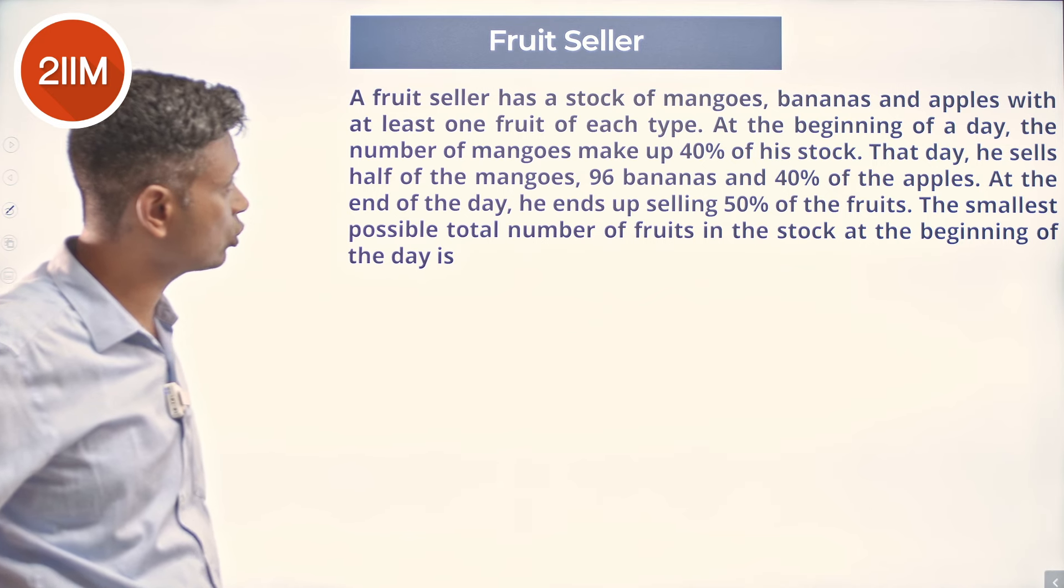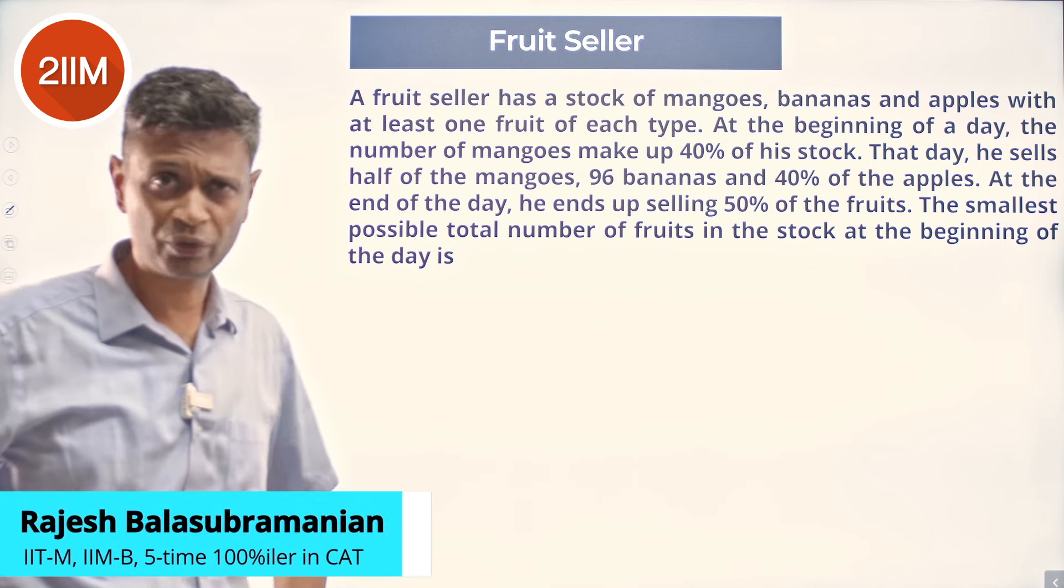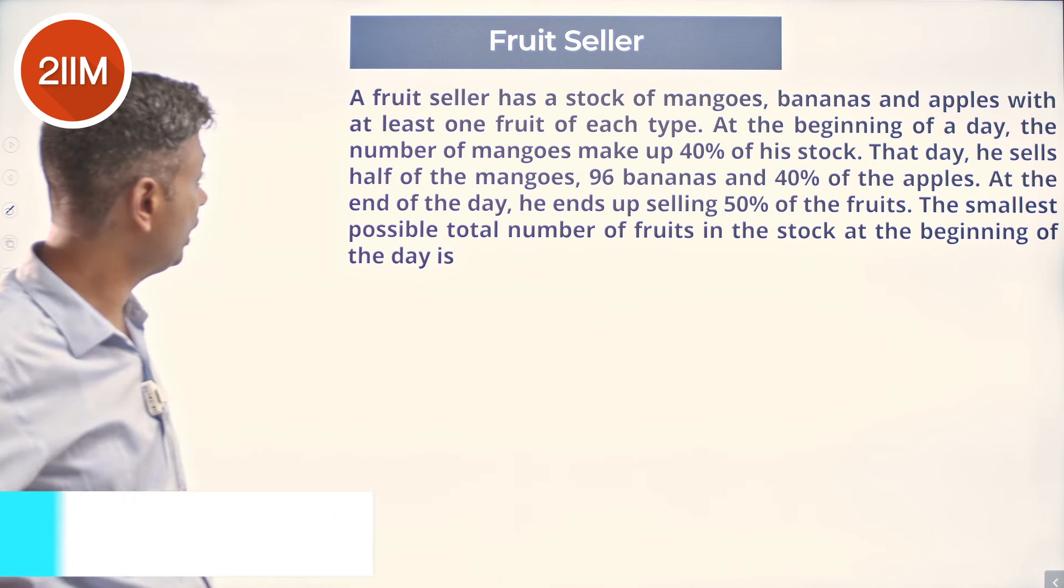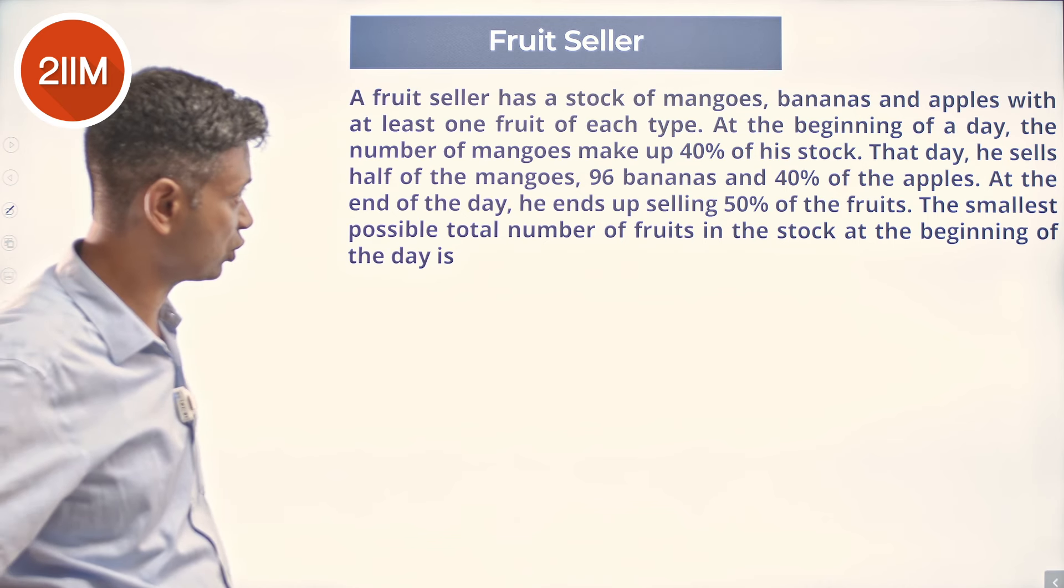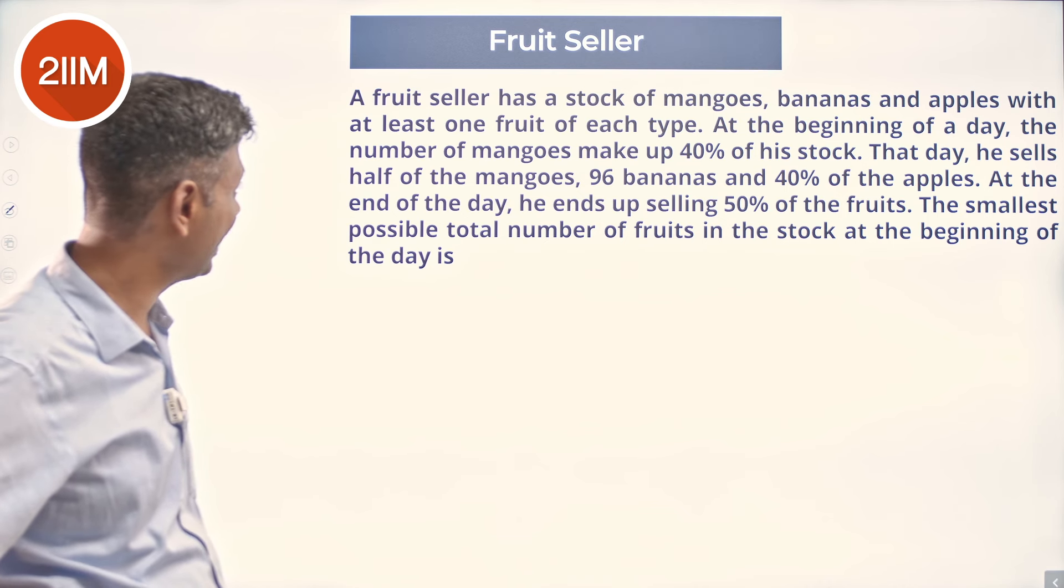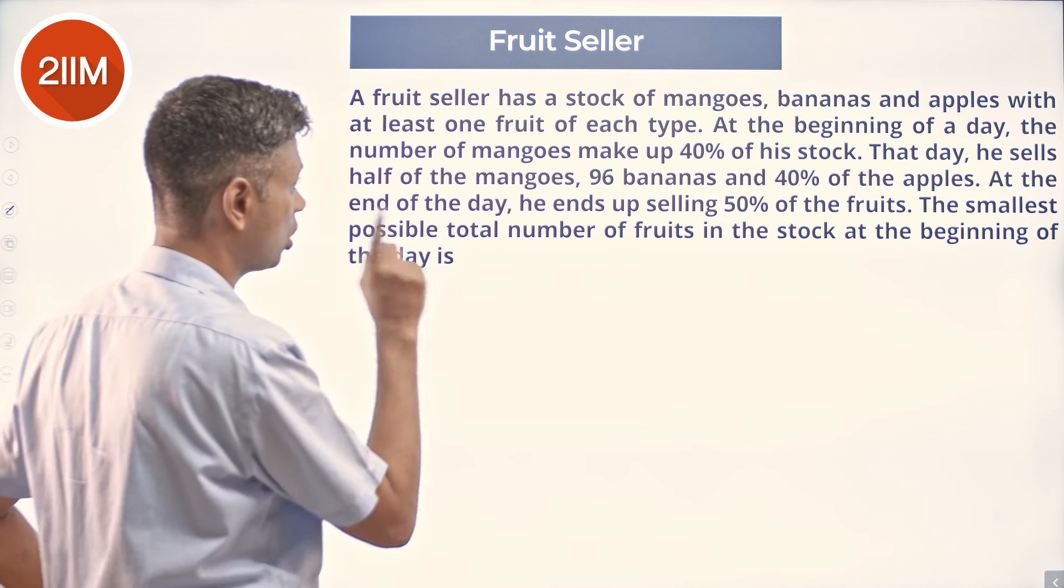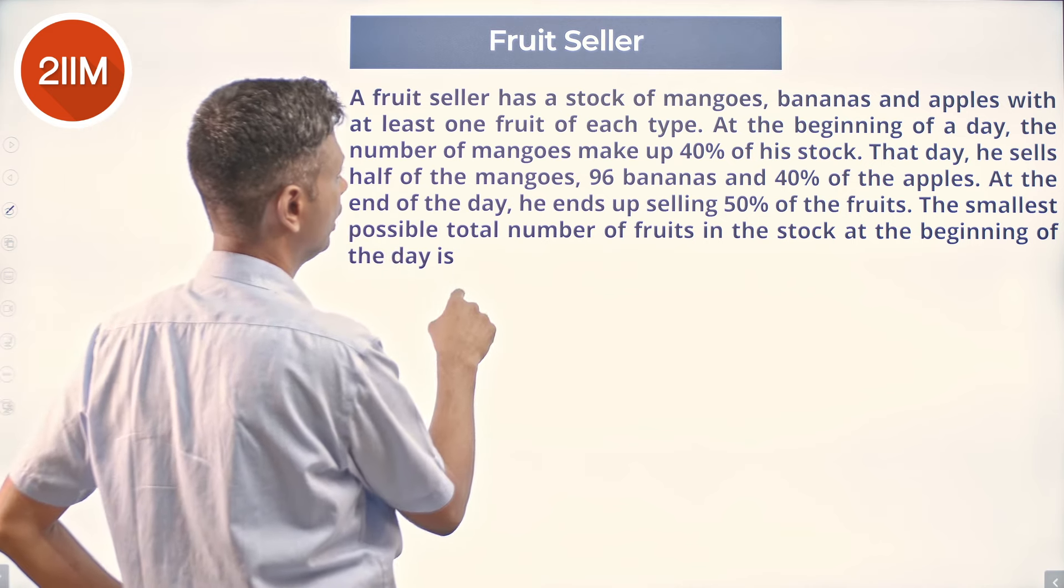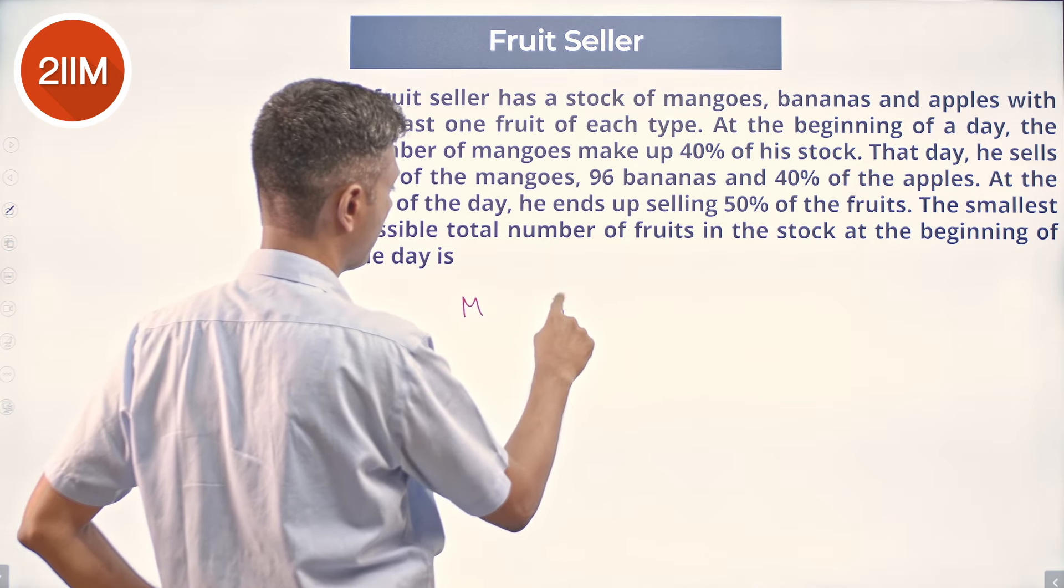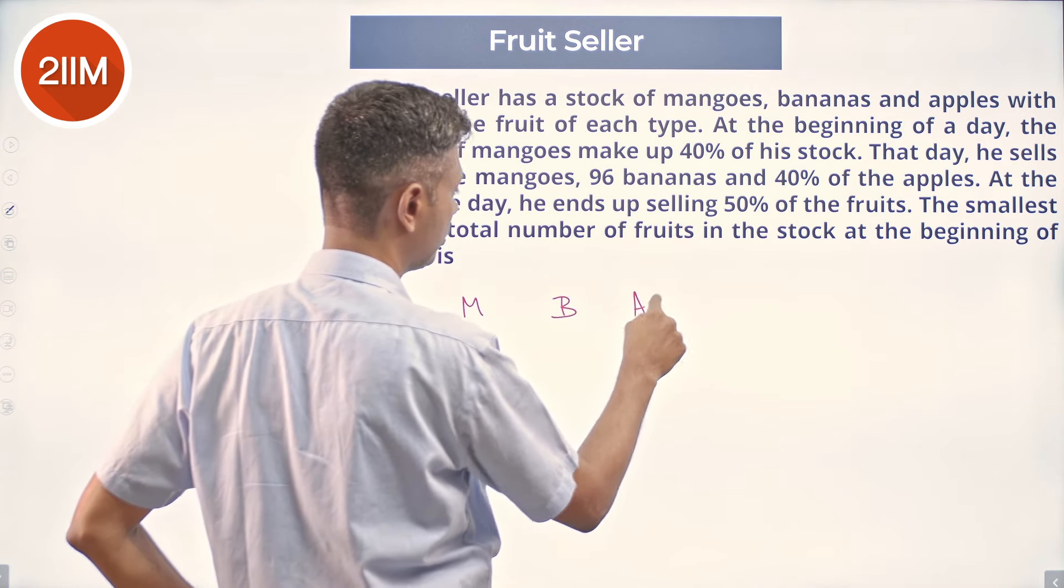A fruit seller has a stack of mangoes, bananas, and apples with at least one fruit of each type. At the beginning of a day, the number of mangoes make up 40% of his stock. That day he sells half the mangoes. So 40% of his stock is mangoes, and he has mangoes, bananas, apples, and total.